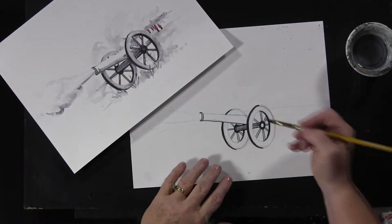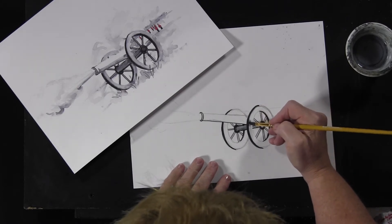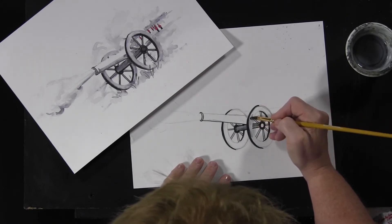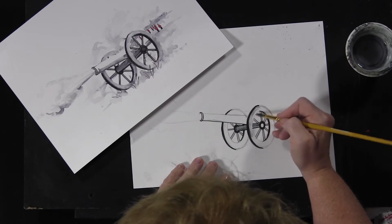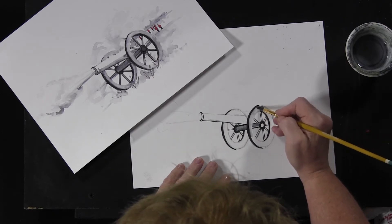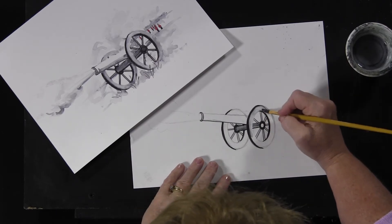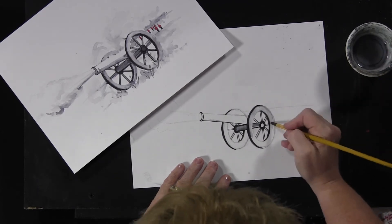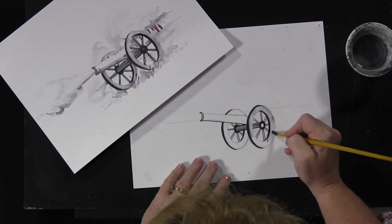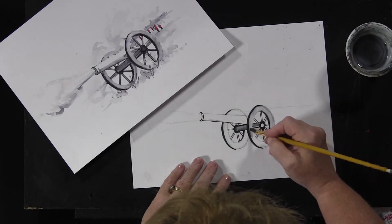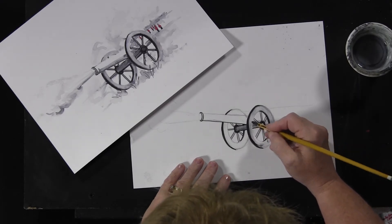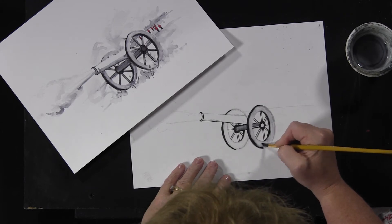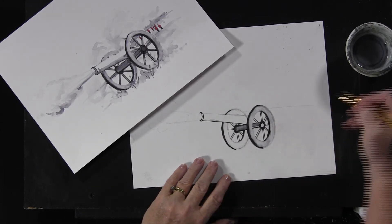I'm going to dip my brush in water and grab just a little bit of that black. See, I'm going right up to it, and then I'm going to fill in the rest of the wheel with that gray. Dip it in water when you need to, and you just grab a little bit more as you go by like that. See how we did that?